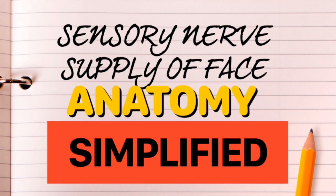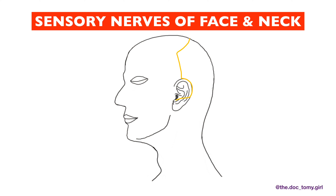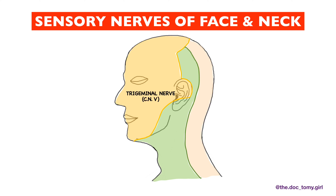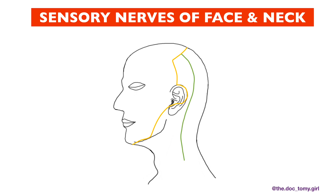This video is about the sensory nerve supply of the face. The trigeminal nerve, through its three branches, is the chief sensory nerve of the face. The next nerve supplying the face is the superficial cutaneous branch of the cervical plexus, and then there is the dorsal primary rami of C2 and C3.